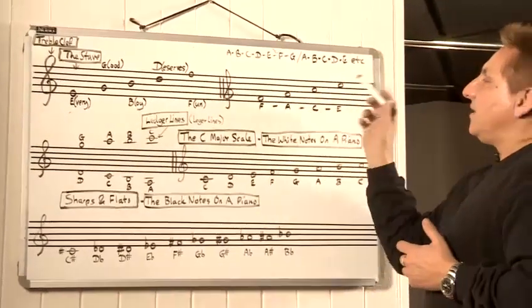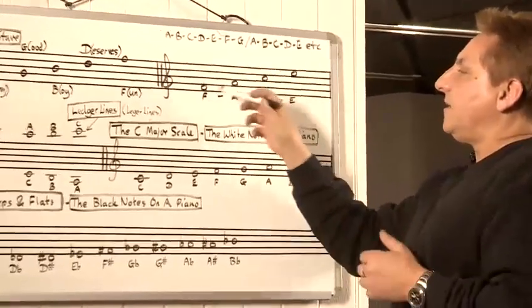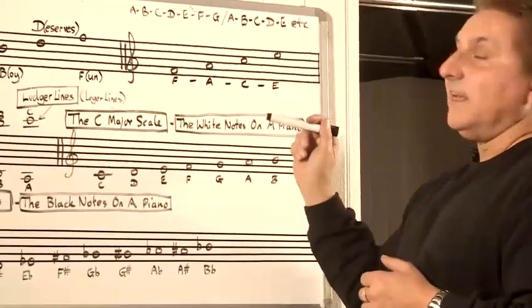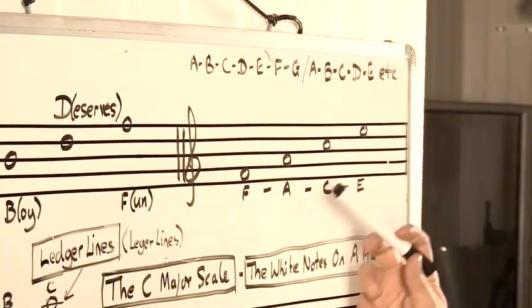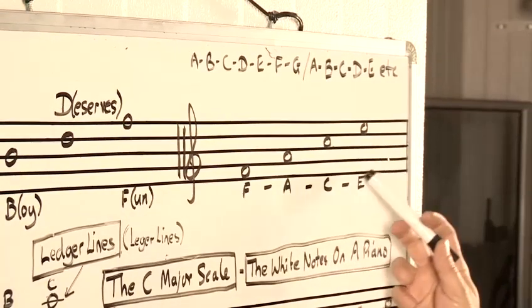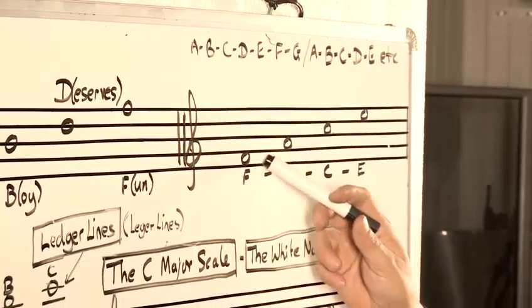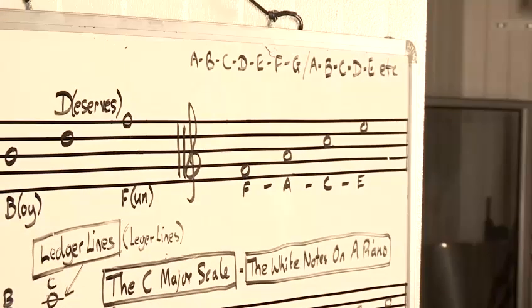Now the ones in the spaces between the lines are a bit easier because they actually spell FACE: F, A, C, E.